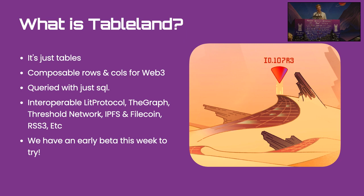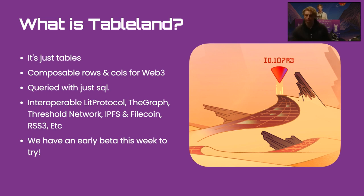TableLand is just tables. We thought this is really interesting because Web3 actually lacks this data structure in any sort of consistent, reusable, composable way. When I say tables, I just mean rows and columns in Web3 that you can query with SQL. It's an interesting feature that you can add when you have structured data in tables. We're building it so it will be interoperable with all of the protocols that do excellent things on top of data.